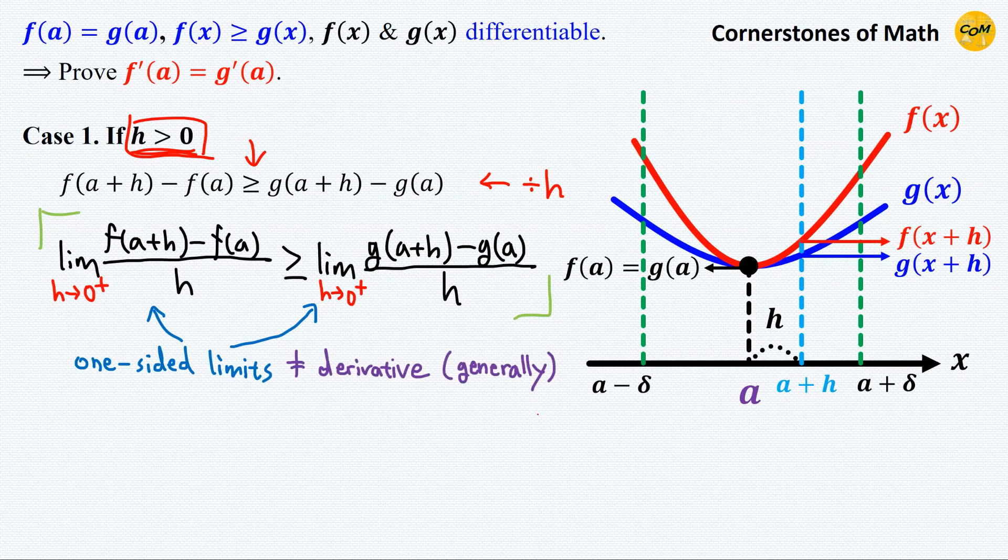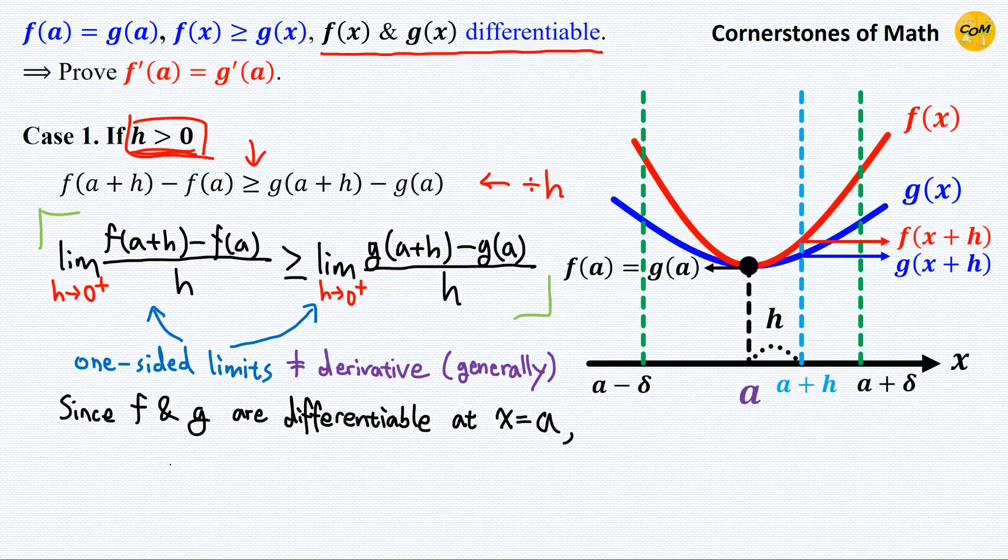Generally, the one-sided limit is not equal to the derivative, but in this case, it is already given in the problem that f(x) and g(x) are differentiable at x equals a. So we know that these one-sided limits are equal to the derivatives. So we can write f'(a) is greater than or equal to g'(a). So we have obtained this.